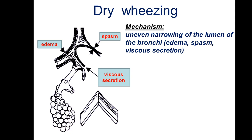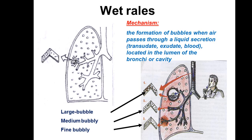The mechanism of formation of dry wheezing is uneven narrowing of the lumen of the bronchi, which may be caused by edema, spasm, or viscous secretion. Wet rales are formed by the formation of bubbles when air passes through a liquid secretion — for example, through transudate, exudate, or blood located in the lumen of the bronchi or cavity. There are three types of wet rales: large bubble, medium bubble, and fine bubbly wet rales.